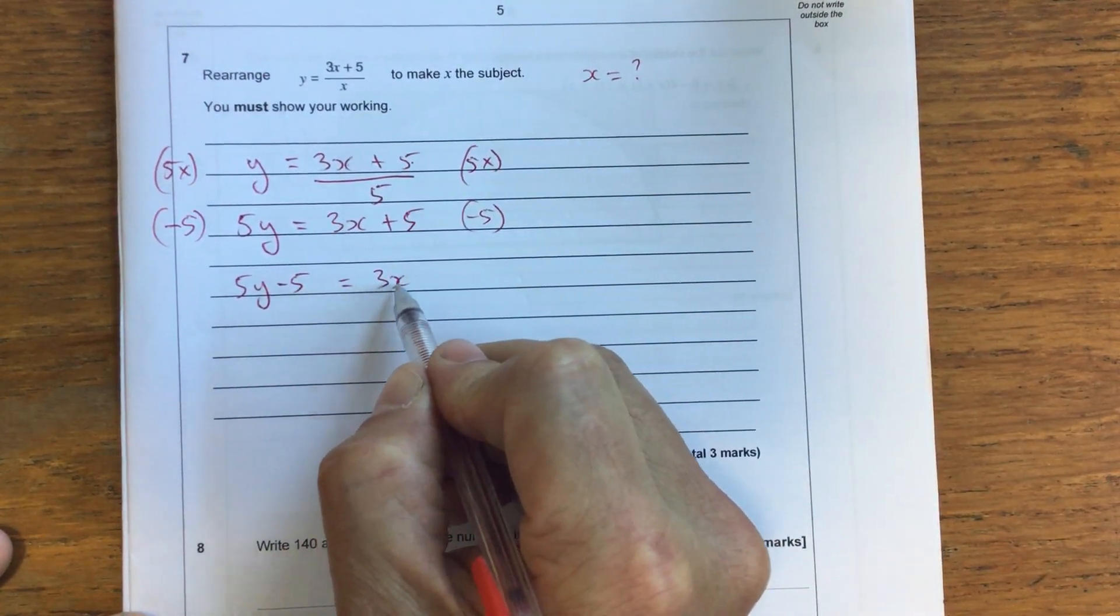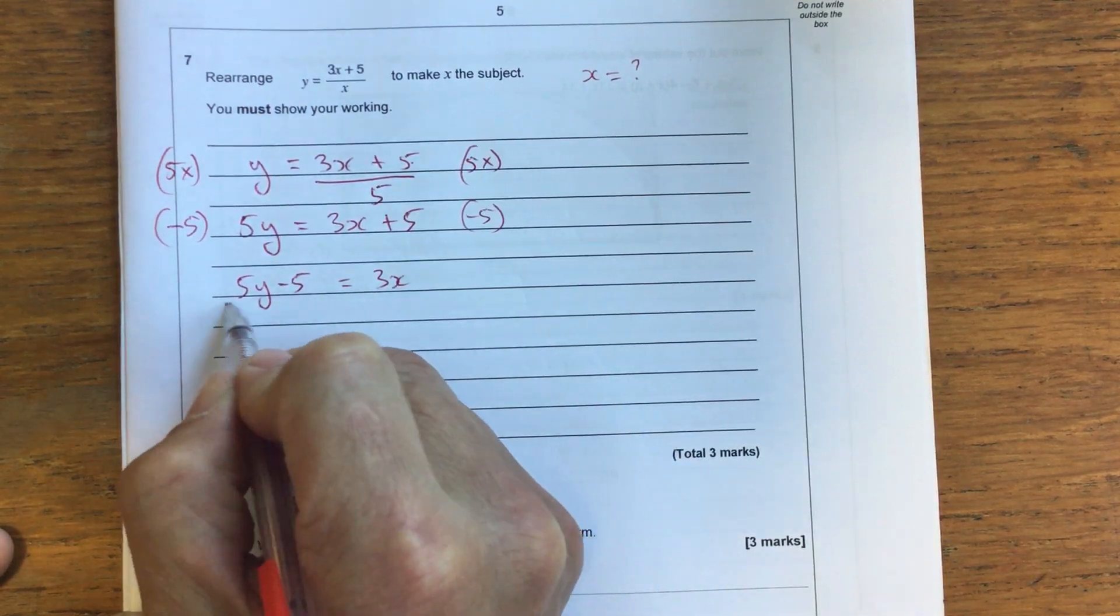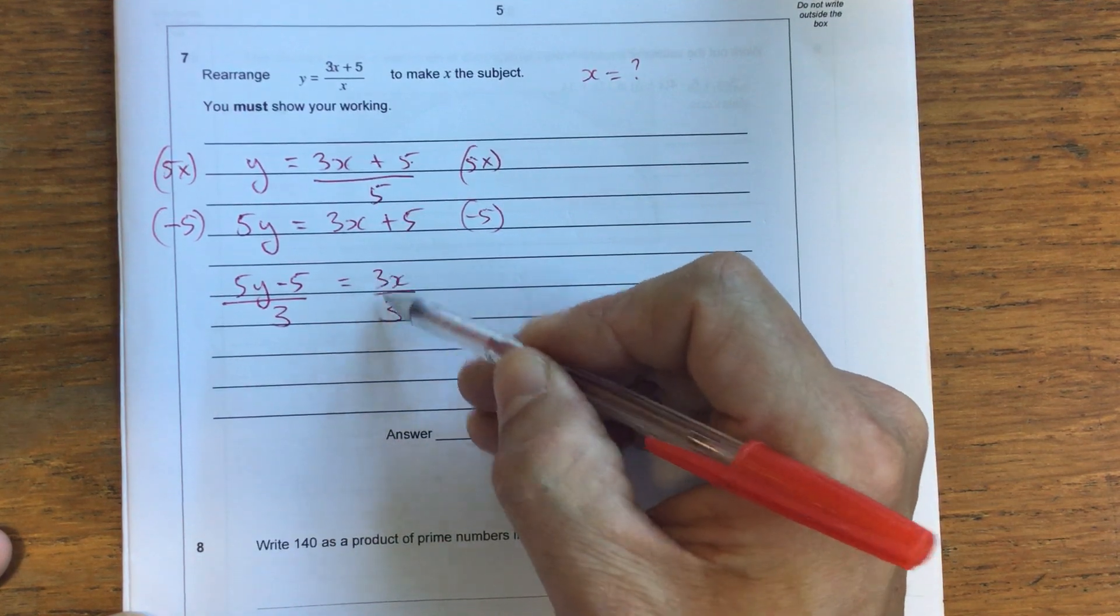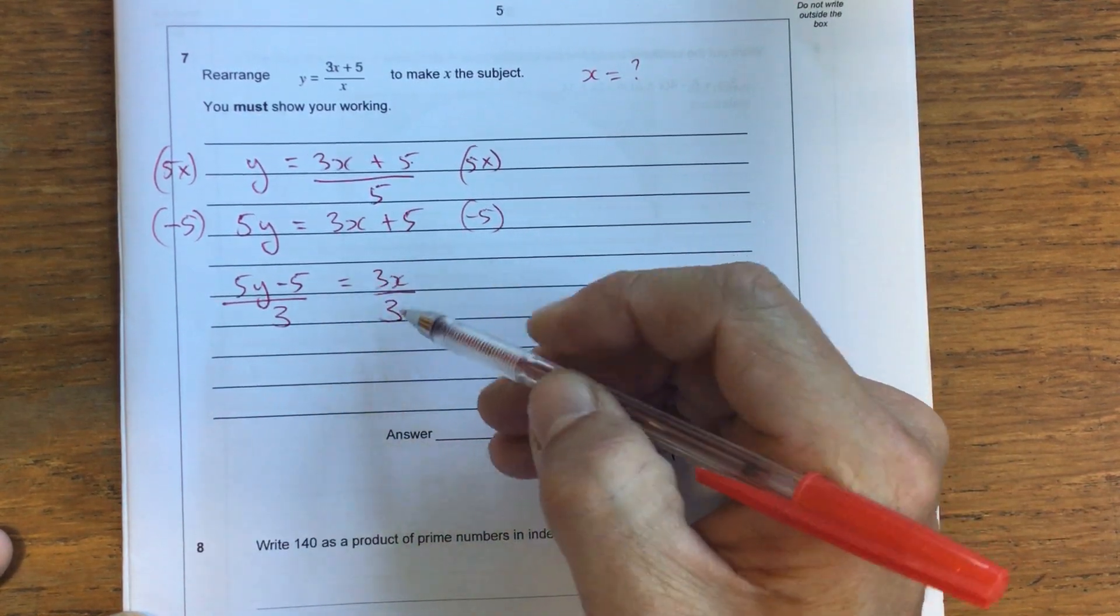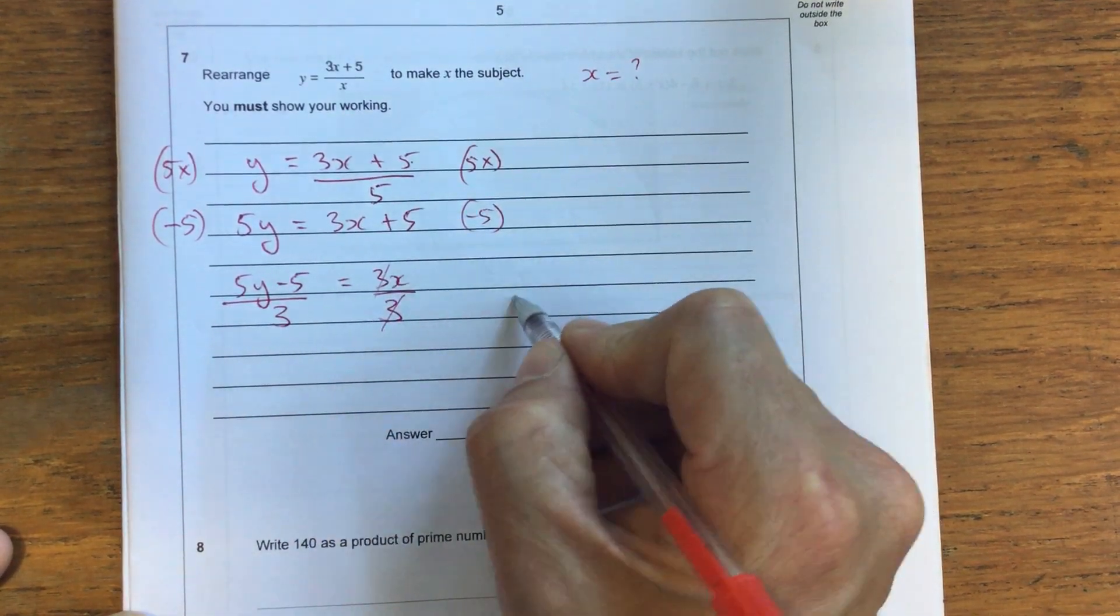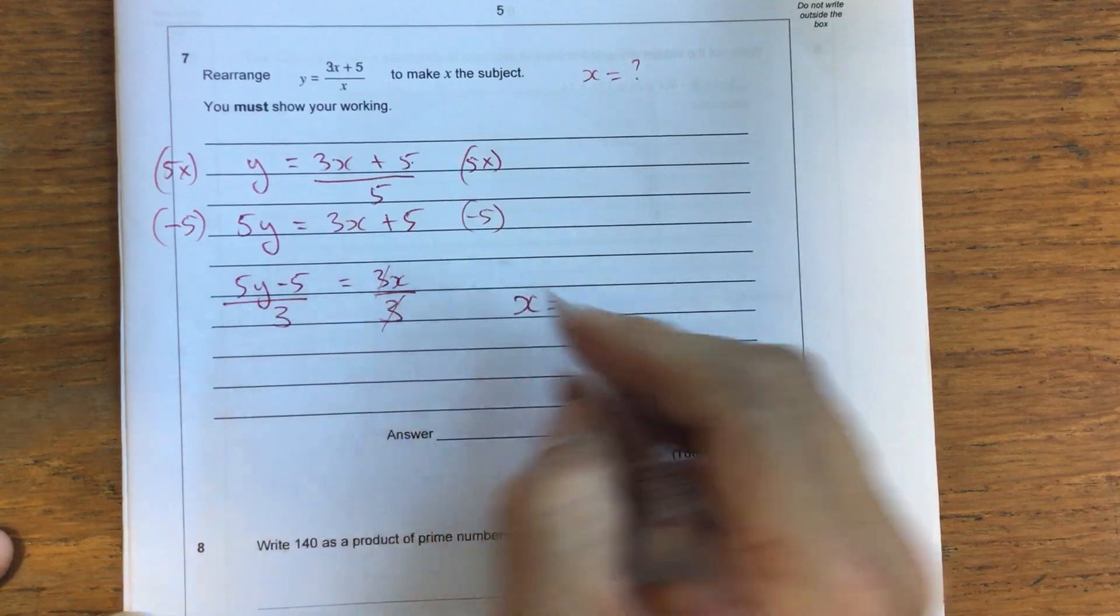So now I've got 3 times x equals this thing. So to get x by itself, I'm going to divide both sides by 3. Now 3 over 3 means 3 divided by 3, and 3 divided by 3 is 1, so I can cancel them out. And that means I've got 1x. So I've got x, and on the right-hand side, I've got 5y minus 5 all over 3.